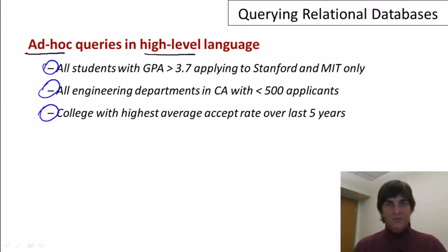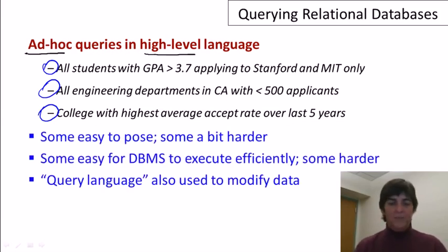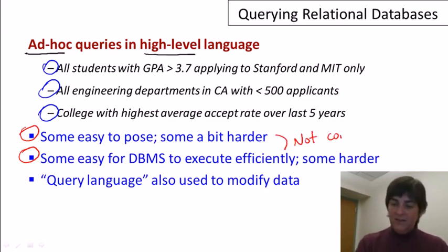Now these may seem like fairly complicated queries, but all of these can be written in a few lines in, say, the SQL language or a pretty simple expression in relational algebra. Some queries are easier to pose than others, that's certainly true. The three queries you see here are pretty easy to pose. Now some queries are easier for the database system to execute efficiently than others. And interestingly, these two things aren't necessarily correlated. There are some queries that are easy to pose, but hard to execute efficiently, and some that are vice versa.